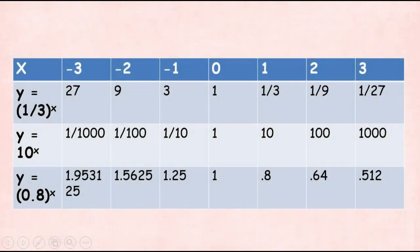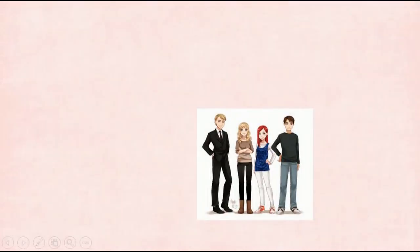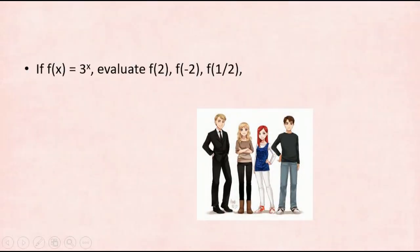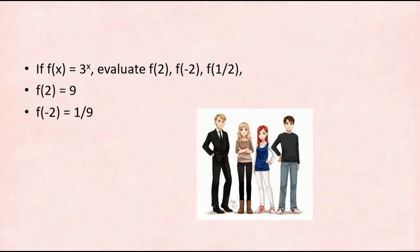Now here is the completed table. For f(x) = 3^x, evaluate f(2), f(−2), and f(1/2). f(2) = 3^2 = 9. f(−2) = 3^(−2) = 1/9. f(1/2) = 3^(1/2) = √3, using the laws of radicals.